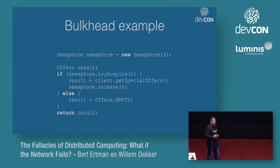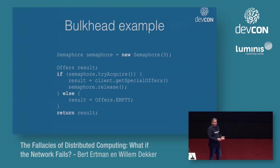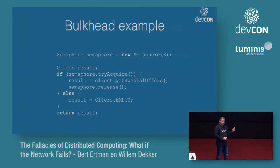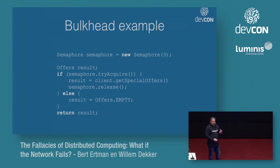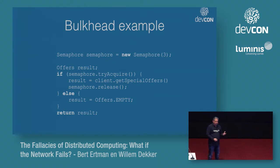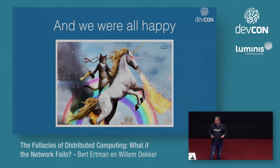To implement a bulkhead, one straightforward way is using a Java Semaphore. The bulkhead size is set in the constructor. Code asks the semaphore for a permit; if it gets one, it executes the target service call and returns the response. If the bulkhead is full, it immediately falls back to a default response. You can also use a connection pool as a bulkhead, but you must ensure it doesn't block when full — otherwise you still end up with blocked threads.